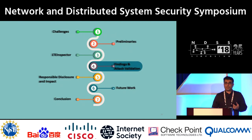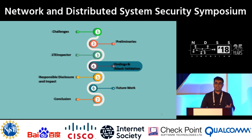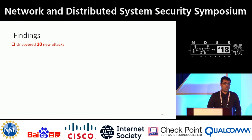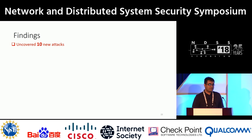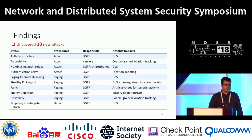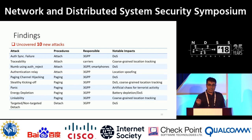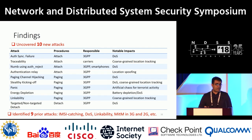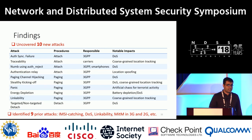Our LTE Inspector uncovered 10 new attacks. The impacts range from denial of service, coarse-grained location tracking, location spoofing, energy depletion, and panic attack. LTE Inspector also identified nine prior attacks, including IMSI catching, denial of service, linkability, and man-in-the-middle in 3G and 2G.